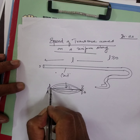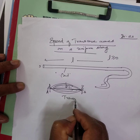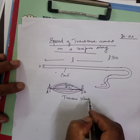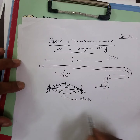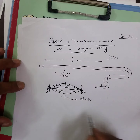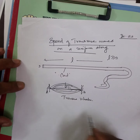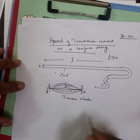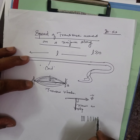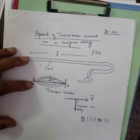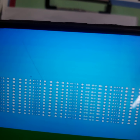You attach the string between two points, suppose A and B. I will pluck it at the center point — just pull it like this. It will be vibrating. When the string is stretched between two points and plucked in the direction perpendicular — at right angles to the string — this type of vibration is called transverse vibration.